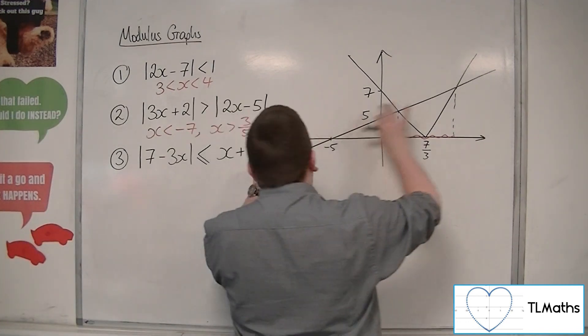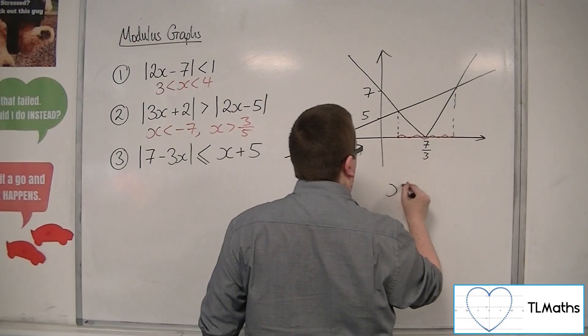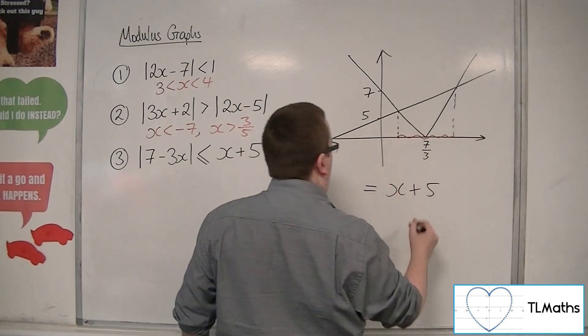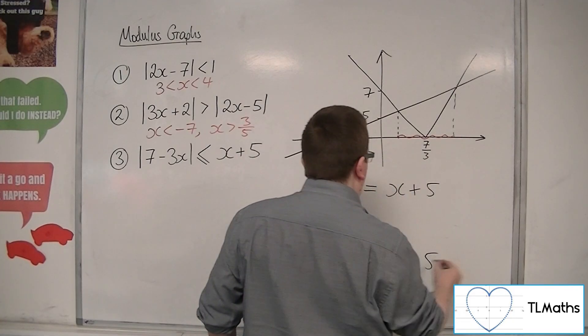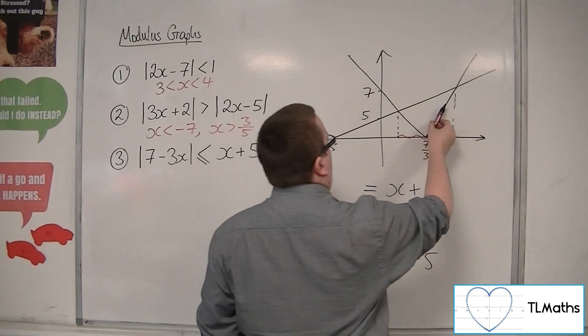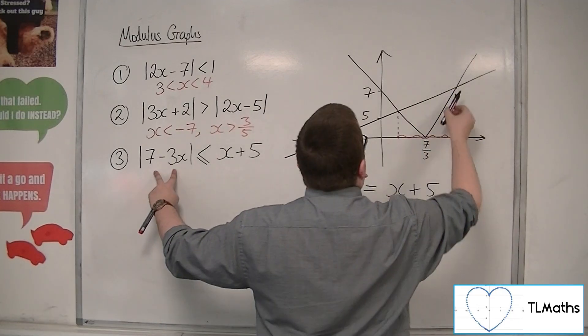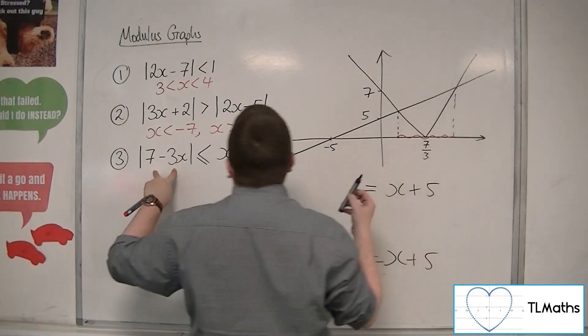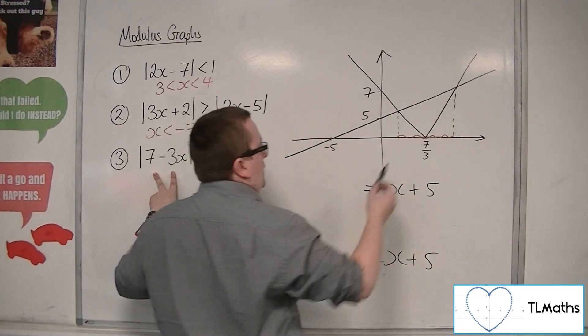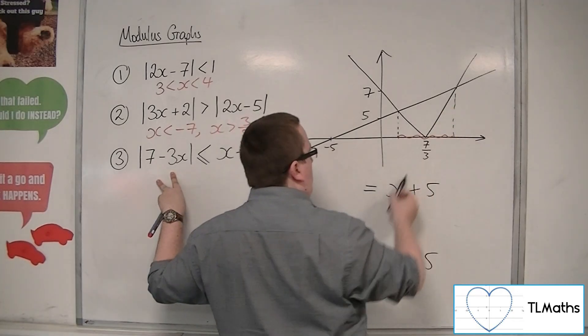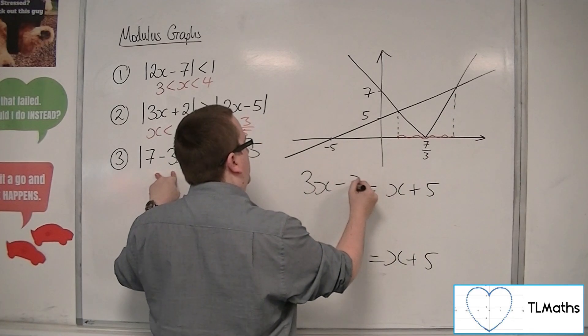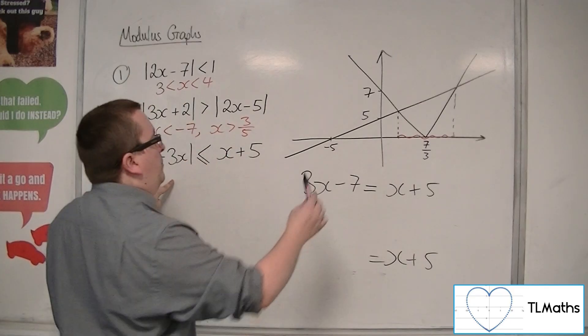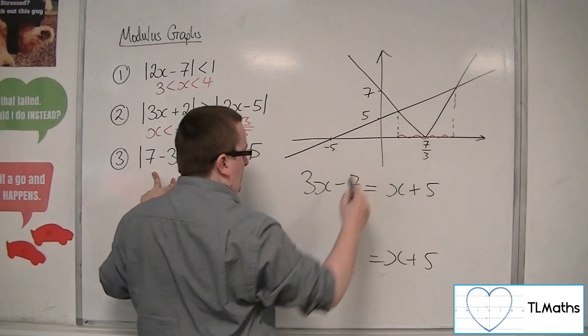So, this line, the x plus 5, I want to know where that is intersecting. Well, firstly, this part, which is not 7 minus 3x, that one is 3x minus 7. Okay. Because it would be crossing the minus 7 down there. So, that's 3x minus 7. And this part is the 7 minus 3x.